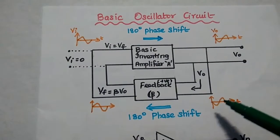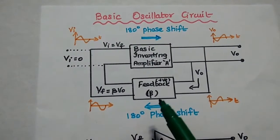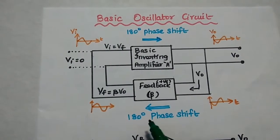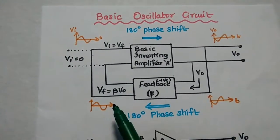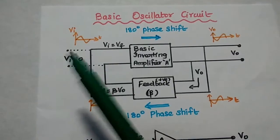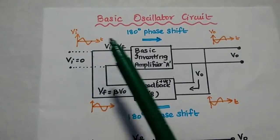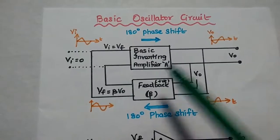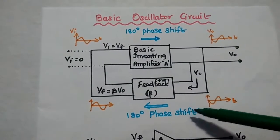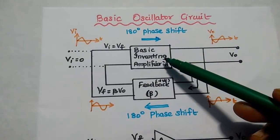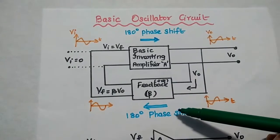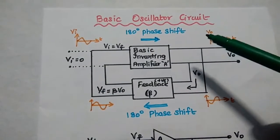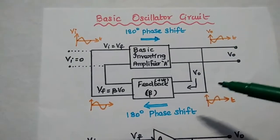That output is taken as input to the feedback network. This positive feedback gives a 180 degree phase shift to make the feedback signal in phase with the input signal. Totally there are 360 degrees — one 180 degrees from the inverting amplifier and another 180 degrees from the positive feedback. So the first condition of the Barkhausen criterion is achieved.